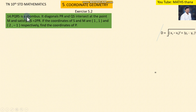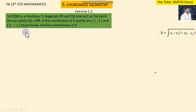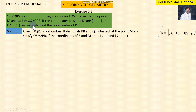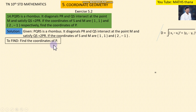Let's set up the diagram. PQRS with diagonals, where M is (2,1). This is a rough diagram. Given: S and M coordinates are given. We need to find the coordinates of P.